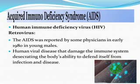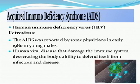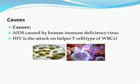Now, acquired immunodeficiency syndrome — AIDS. The full form is Acquired Immuno Deficiency Syndrome. It is caused by HIV, a retrovirus. AIDS was first reported by physicians in the early 1980s. It is a human viral disease that damages the immune system, reducing the body's ability to defend itself from infection and disease. AIDS is caused by the human immunodeficiency virus, which attacks T lymphocyte cells — a type of white blood cell. This HIV virus affects T cells and the immune system becomes depressed.